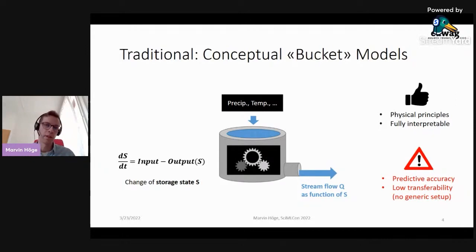The downsides of such models, however, are that good predictions require a lot of fine-tuning and reiteration of the model setup. So it is usually difficult to use a model that was fitted on one catchment in other catchments. There's simply no generic model setup that works in every case.